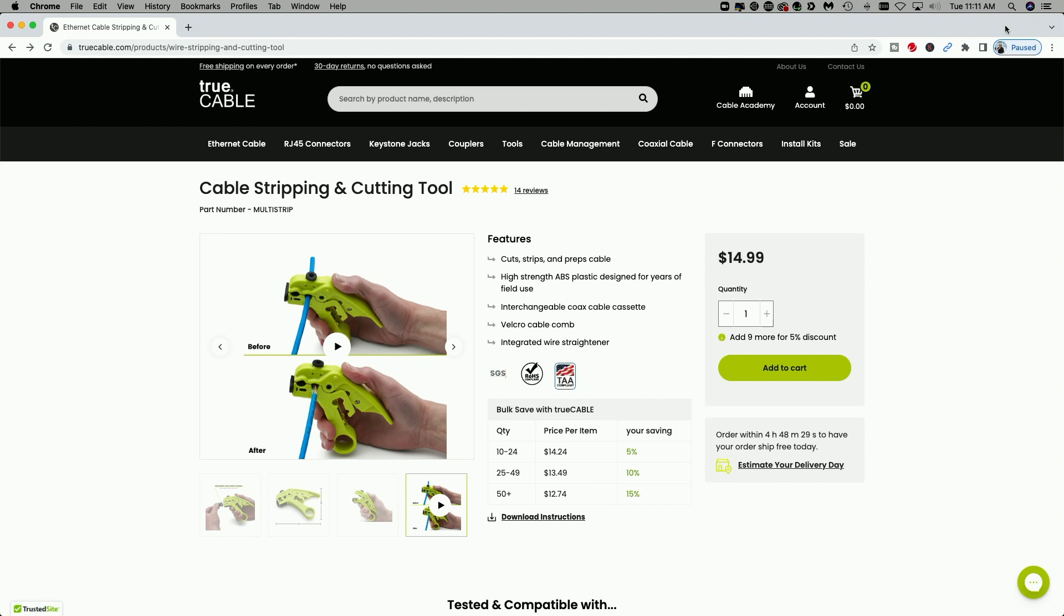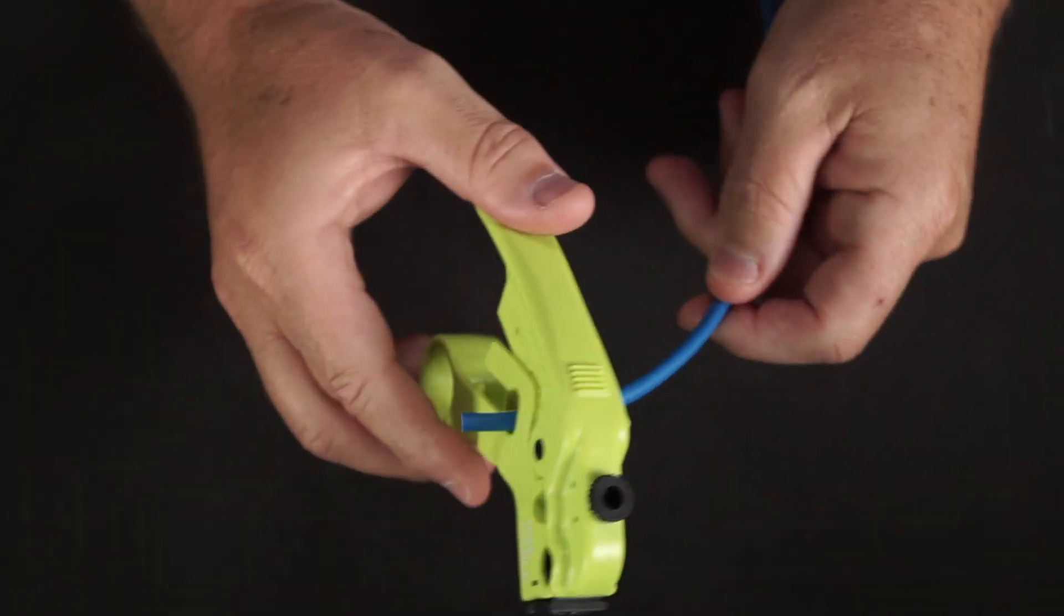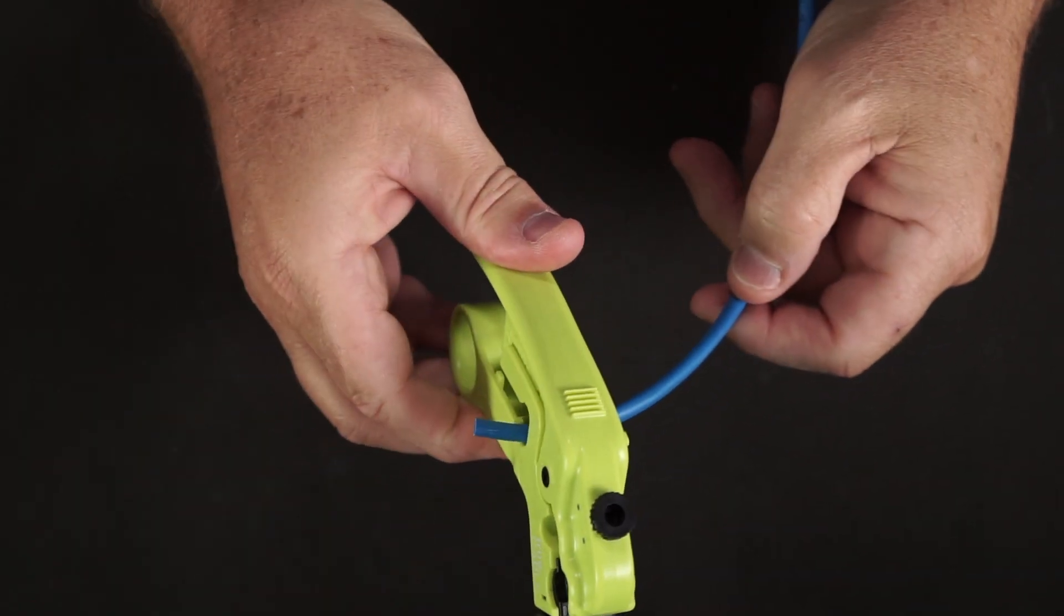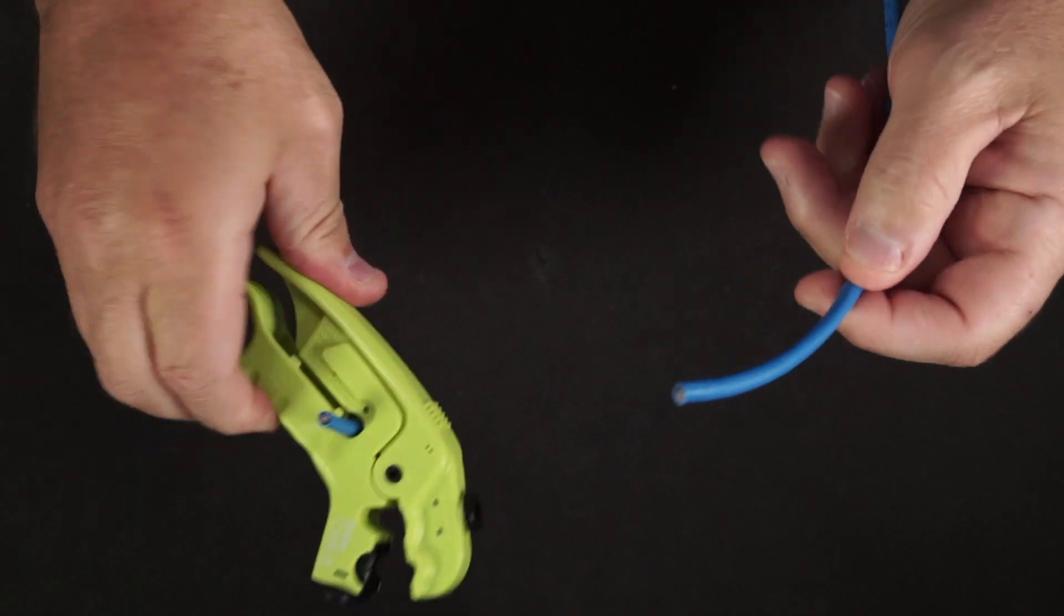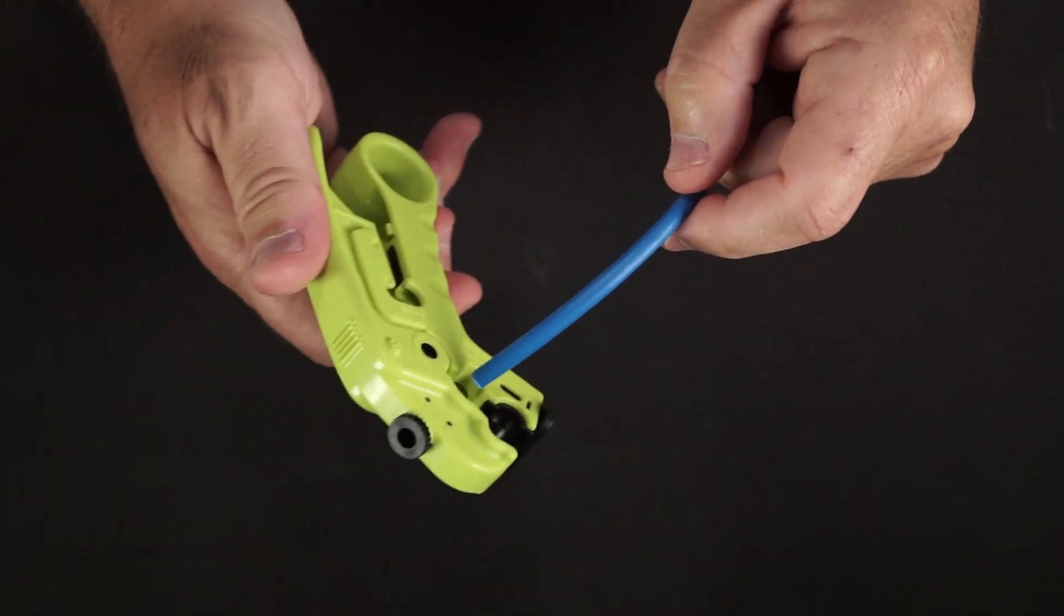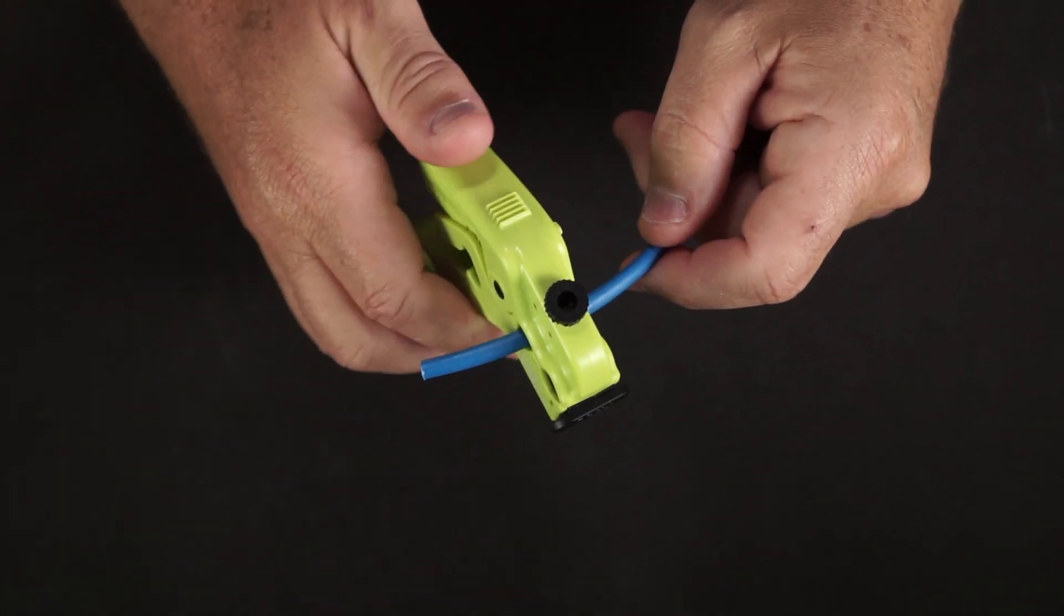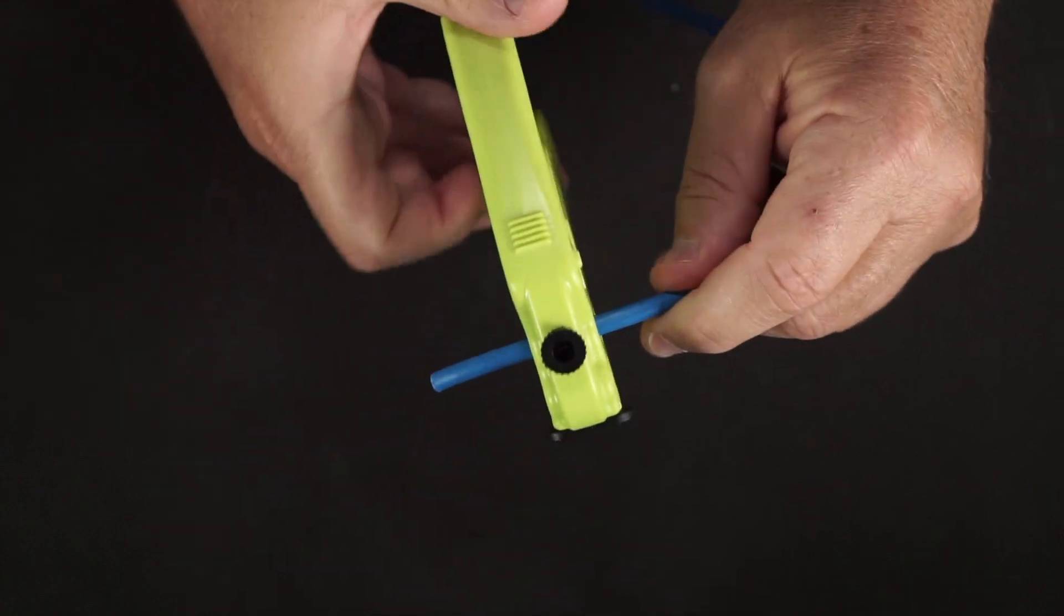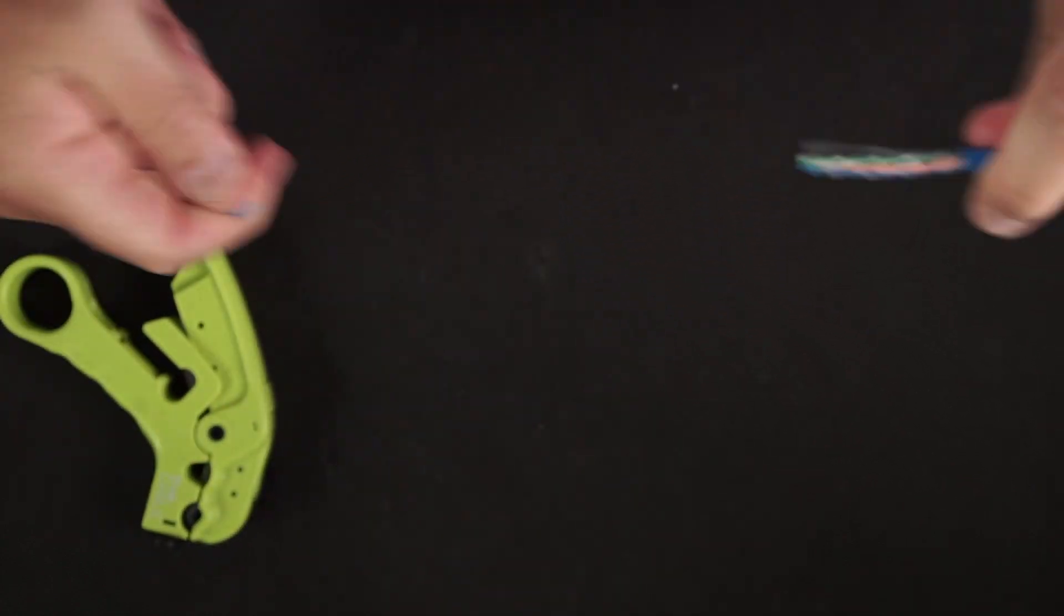Coming in at number four at $14.99, the TrueCable cable stripping and cutting tool. This tool is a time saver. It's absolutely amazing. It cuts cable, it strips cable, and it strips with precision because it has an adjustable blade so that you can remove the outer jacket without nicking the actual conductors inside the cable.